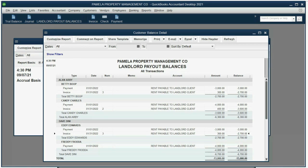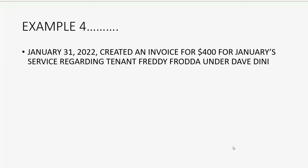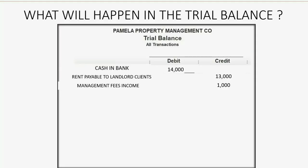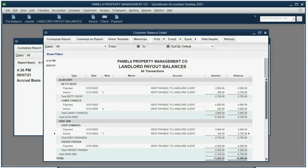And lastly, we will bill Dave Dini for Freddie Froda — $400, because Freddie's rent is $4,000. So if we've earned $400 more in management fees income, that goes up to $1,400, but then we will pay out $400 less later because of what we earned, so that goes down to $12,600.